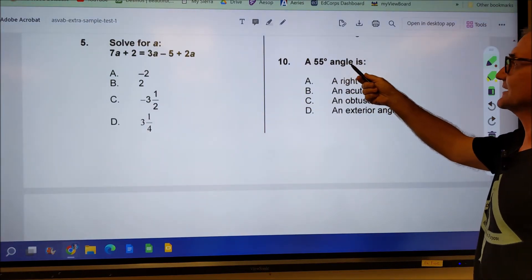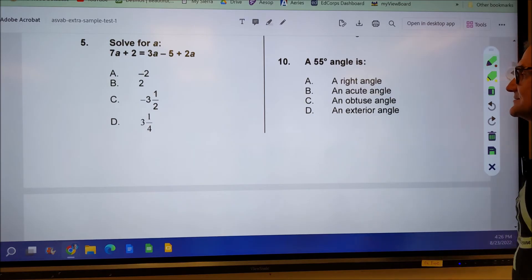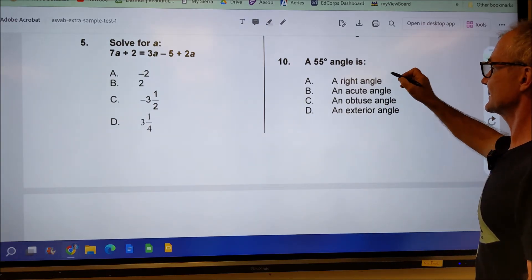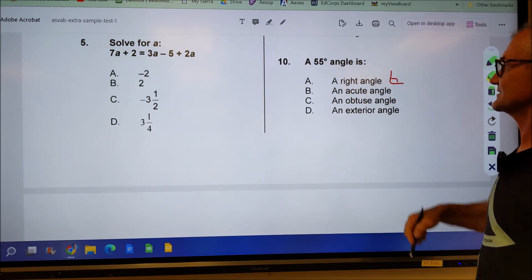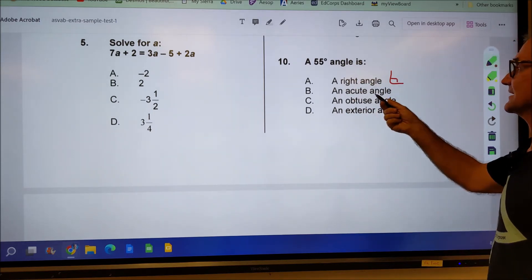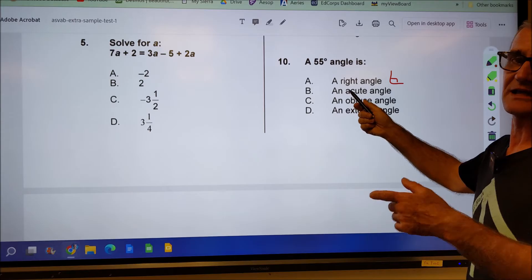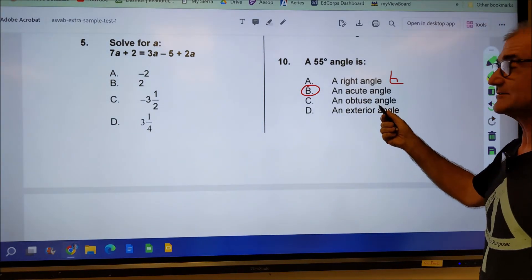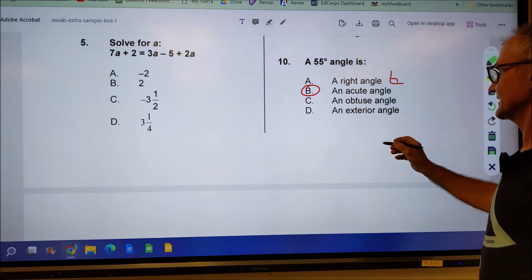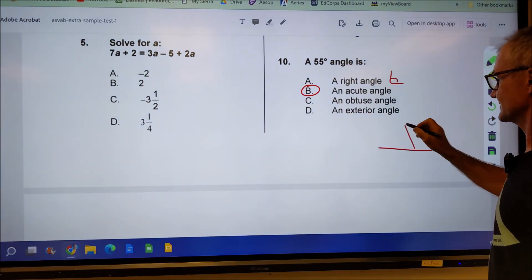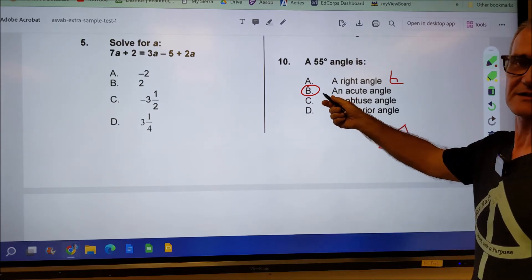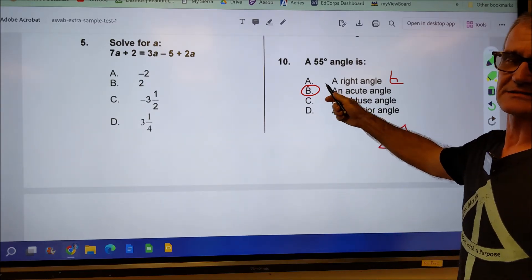Okay. Number 10, a 55 degree angle is probably best to use a process of elimination here, a right angle. Well, right angle is exactly 90. 55 is not exactly 90. An acute angle, an acute angle is something less than 90. So that is a correct answer. An obtuse angle is something greater than 90. An exterior angle is if I had a triangle this way, this would be an exterior angle of it. The only answer that makes sense is an acute angle less than 90 degrees.